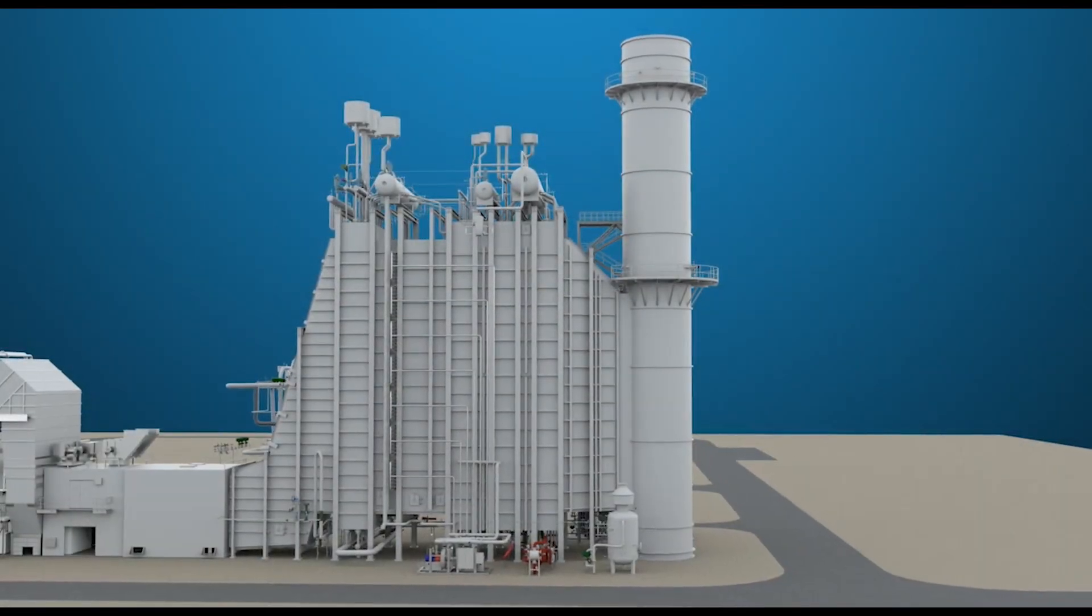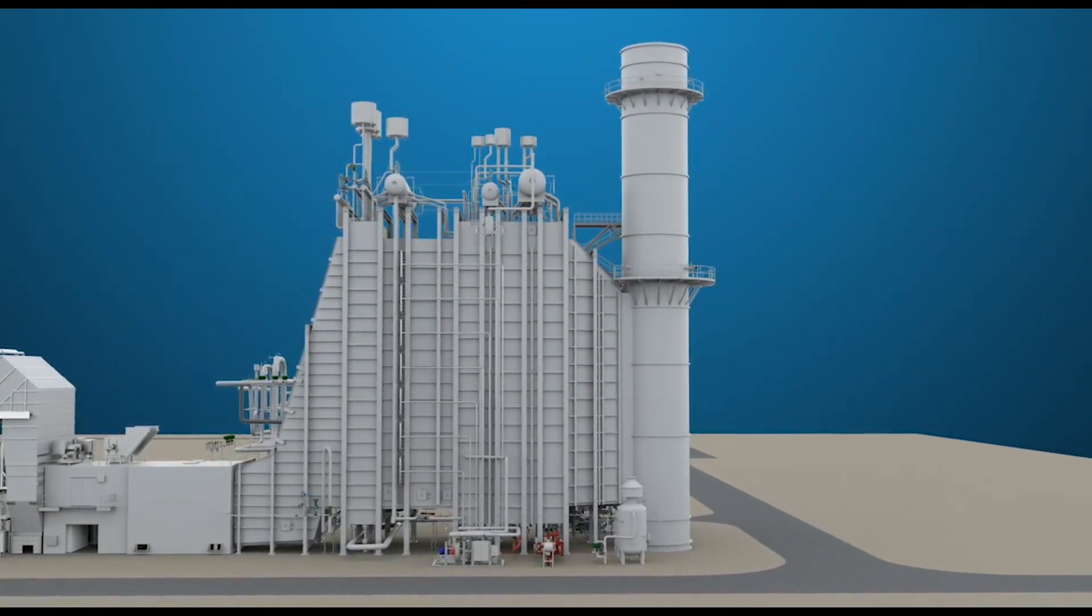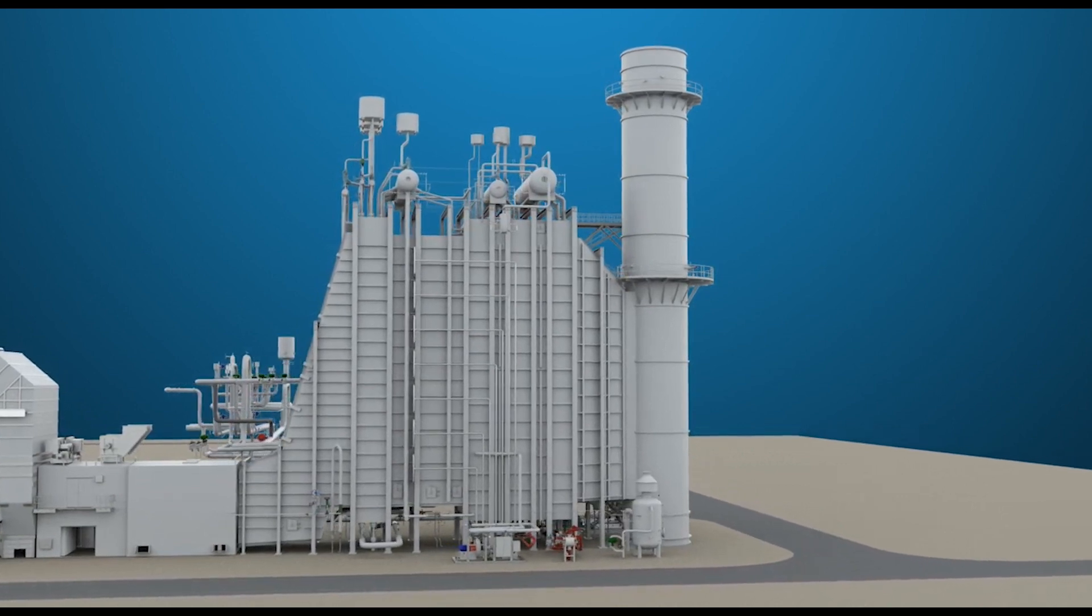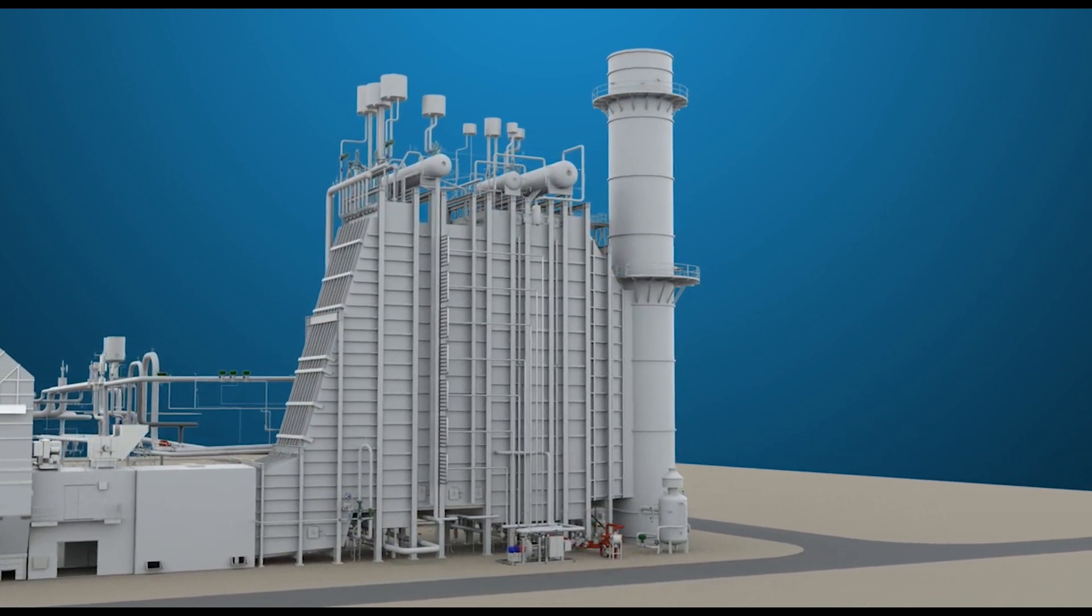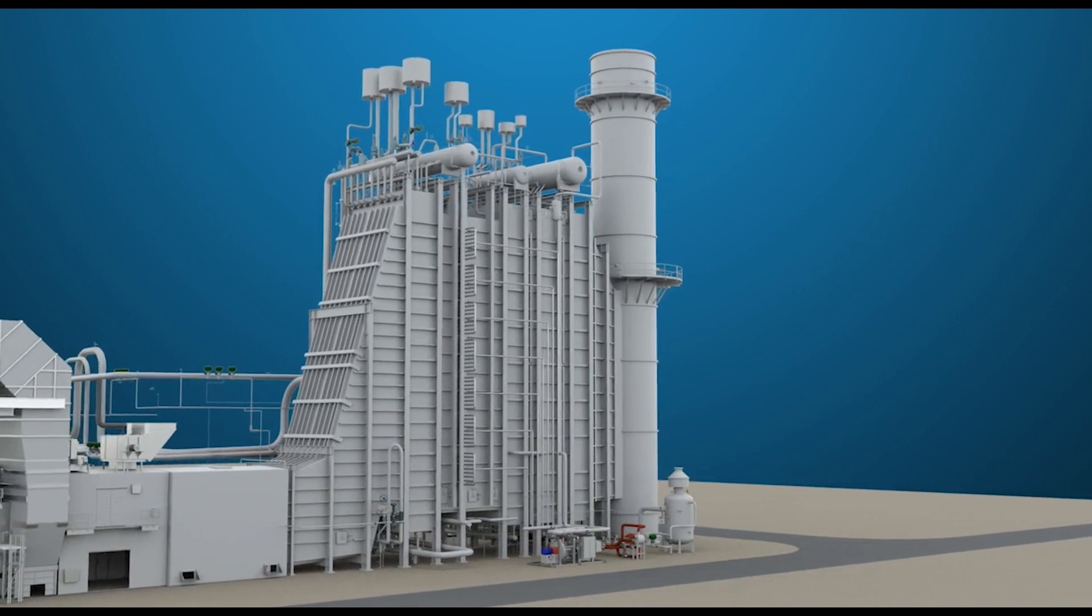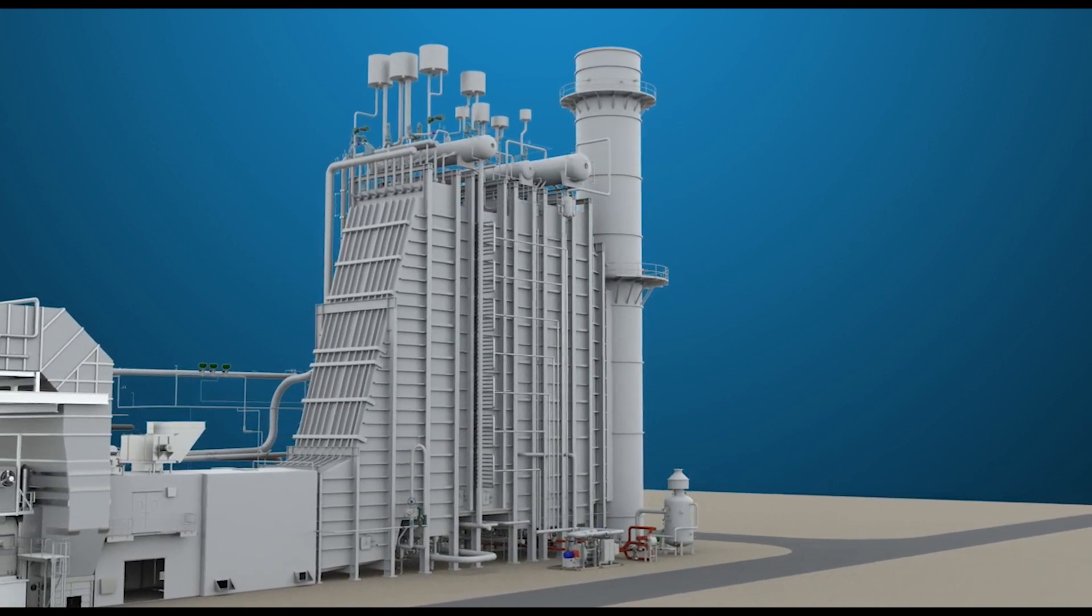These fluctuating load demands have pushed gas turbines to operate at much lower loads, resulting in wide variations in steam temperature and flow from the Heat Recovery Steam Generator, or HRSG.